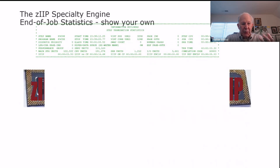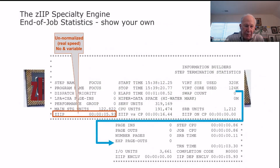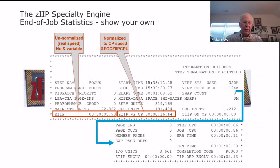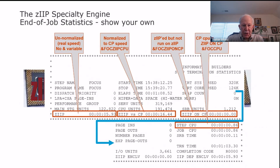Every job will finish up with job statistics, and in those statistics we're going to give you a number of elements. We'll show you the unnormalized speed of the ZIP — there is no AMPER variable for this. We'll show you the ZIP on CP, which is Amperfolk ZIP CPU — the actual amount of CPU we were able to move from CP to ZIP. We'll also show you the amount of ZIP-enabled code that did not get to move there and had to run on a CP. And we'll show you the full step CPU, which includes not only Amperfolk CPU, but also the ZIP on CP as well.